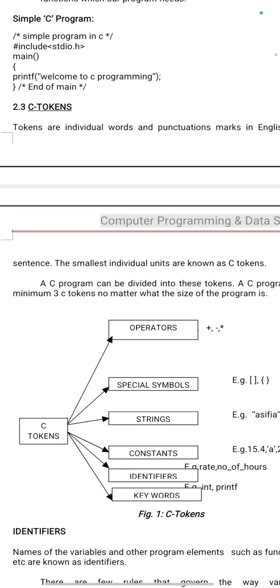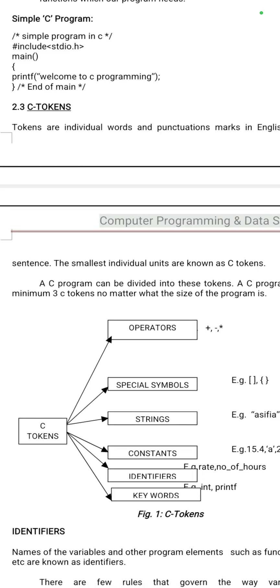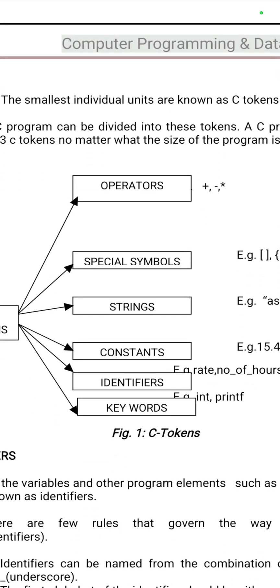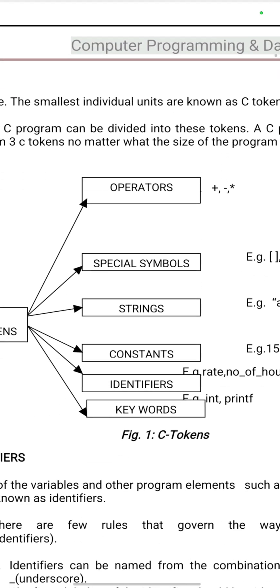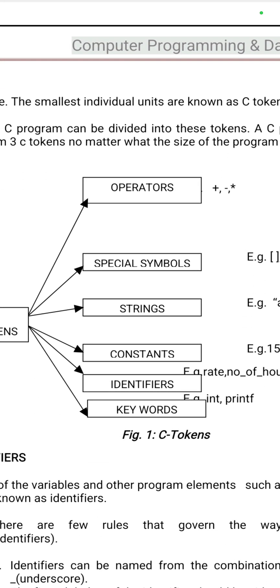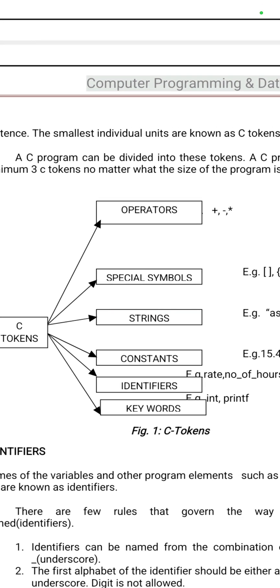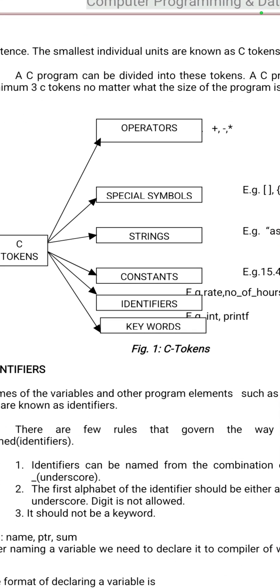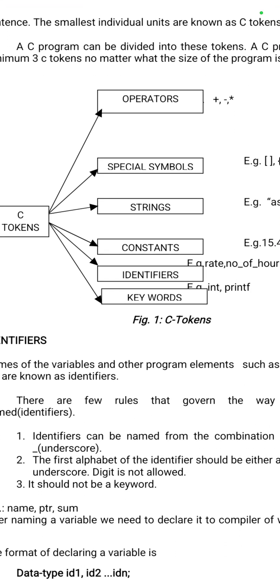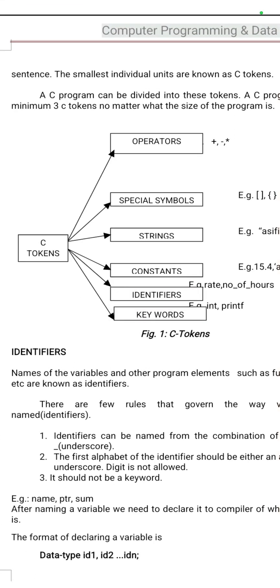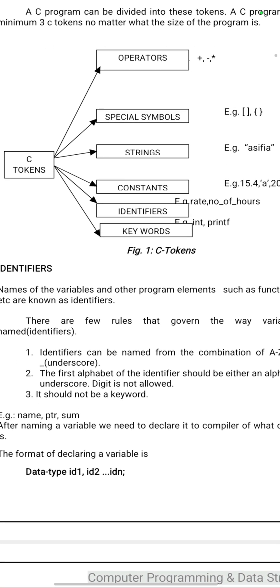Then tokens — what is a token? Small, single individual units are known as tokens. These are the different types of tokens: operators, special symbols, strings, constants, identifiers, and keywords. Operators and identifiers are very important.